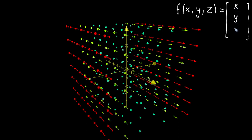At a given point, x, y, z, you output the vector itself, x, y, z. So let's think about what this would actually mean.